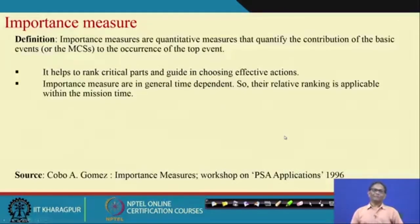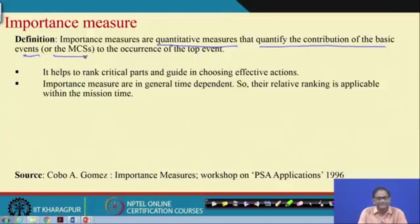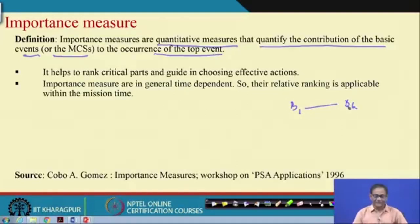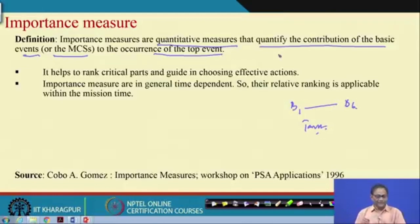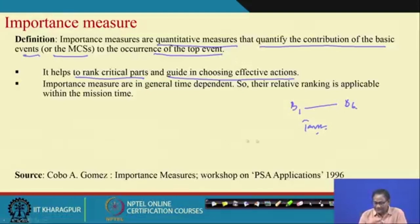What are the importance measures? There are many importance measures, and they are quantitative measures. They quantify the contribution of the basic events or the minimal cut sets (MCS) to the occurrence of the top event. You have seen B1 to B6 — these are the basic events. You want a quantitative measure that tells you what is the contribution of each event to the top event — tank rupture. This helps to rank the critical parts and guide in choosing effective actions.